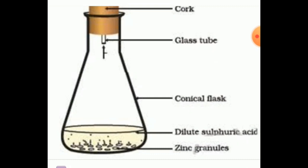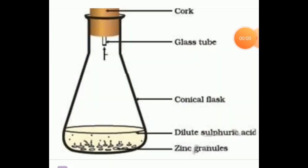Do you observe anything happening around the zinc granules? When we observe, we see that bubbles are released around the zinc granules — that is the first observation: bubbles are seen around the metal. The second observation: when we touch the test tube, it is hot — the test tube becomes hot, meaning heat is released at that location.